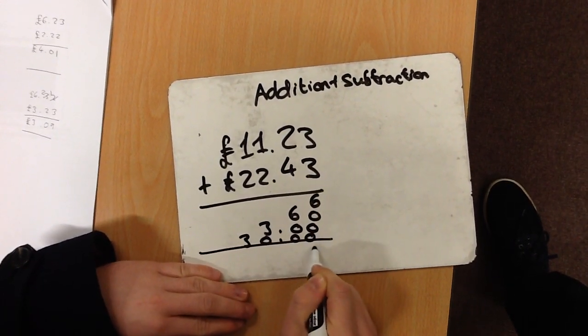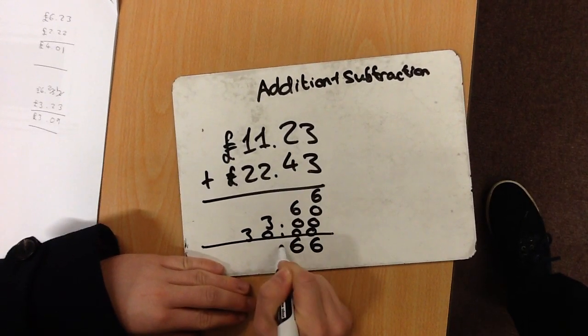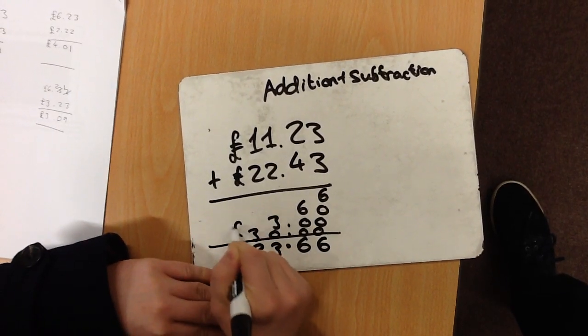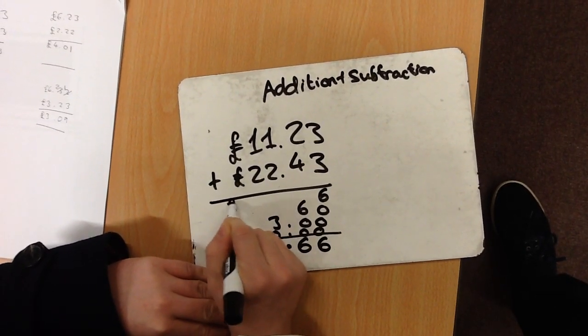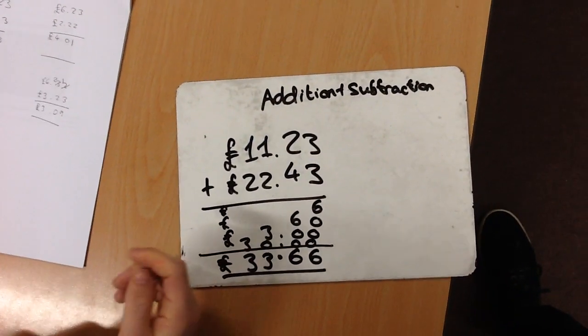£6 add nothing, add nothing, add nothing is £6. £60 add nothing is £60. Put the decimal point in the same place. £3 and £30. Remember to add in our pound signs. The answer is £33.66.